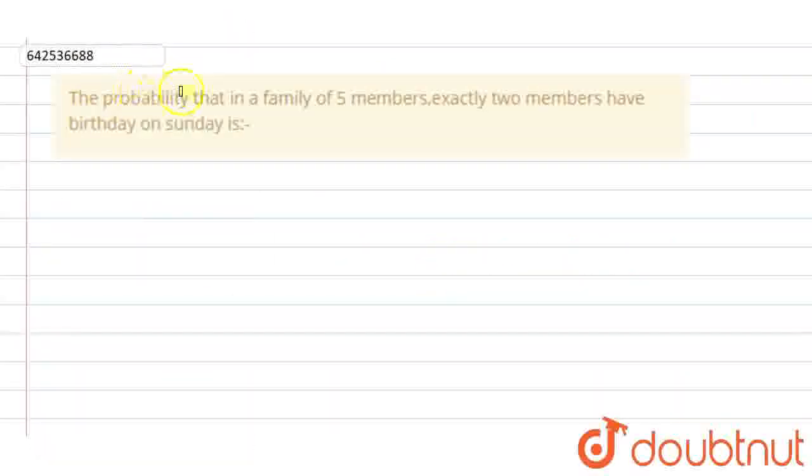Hello student, the question is: the probability that in a family of 5 members, exactly 2 members have birthday on Sunday.